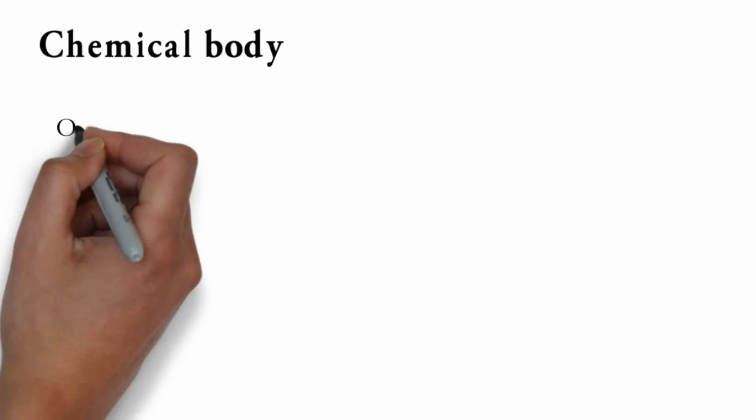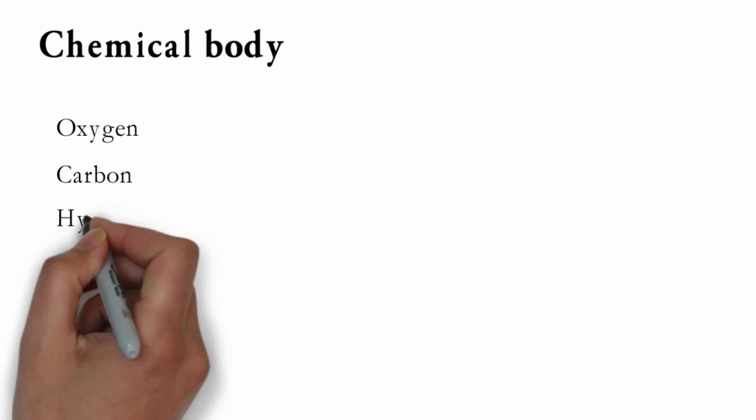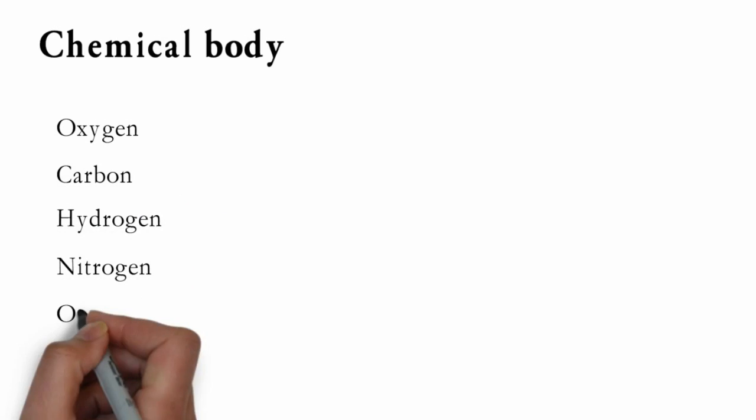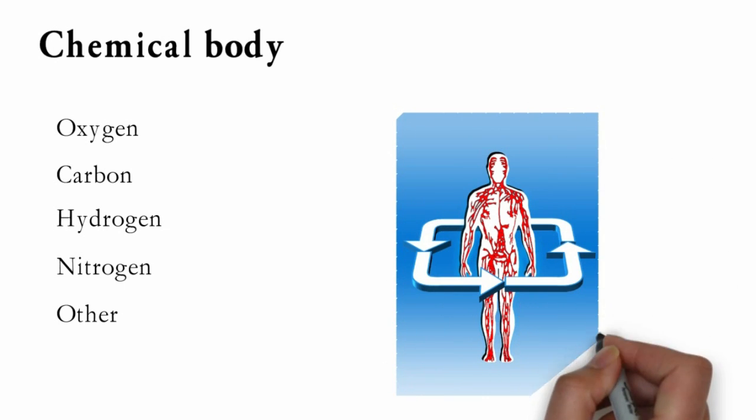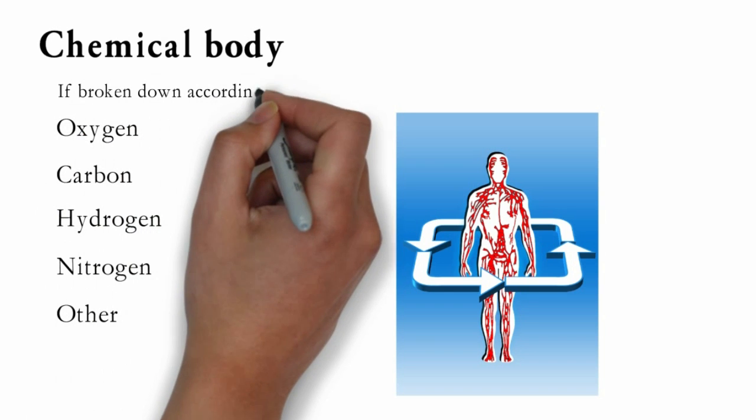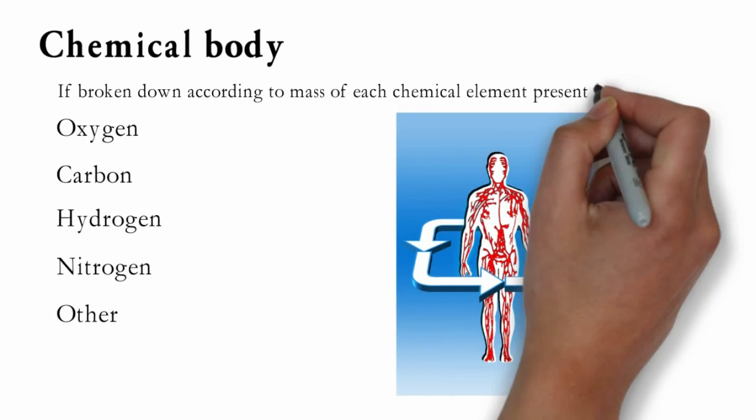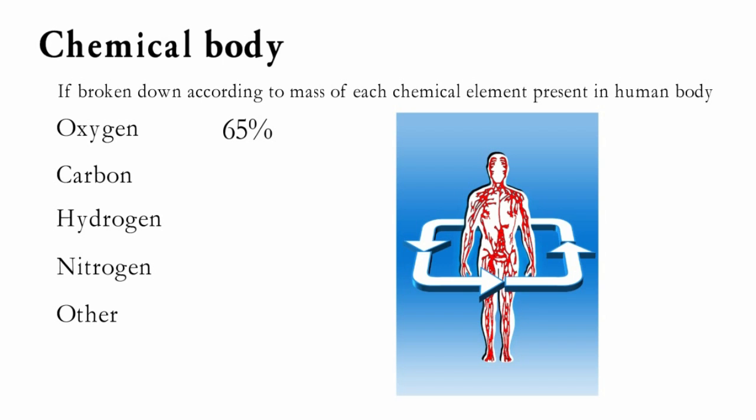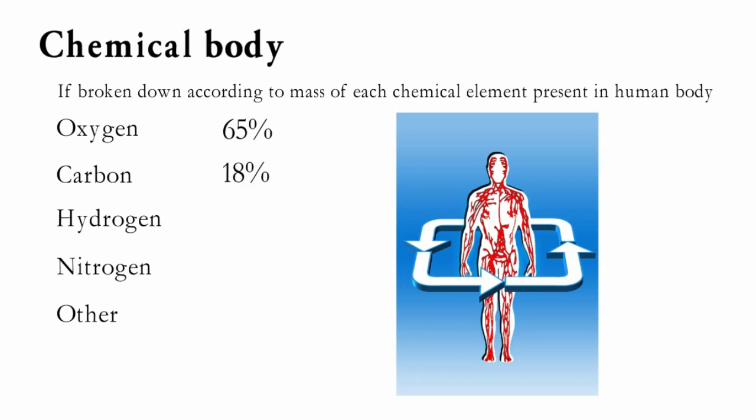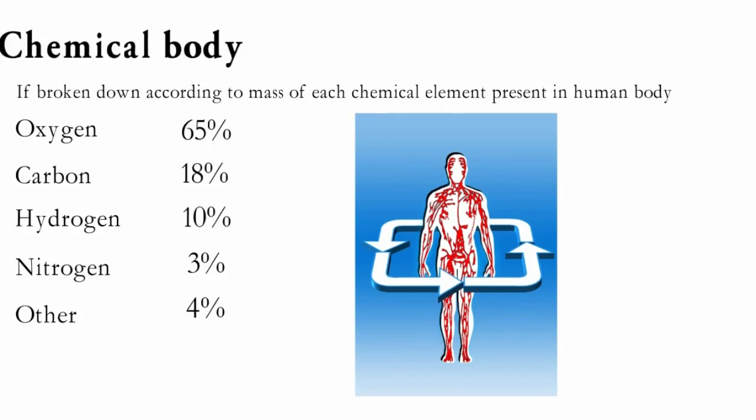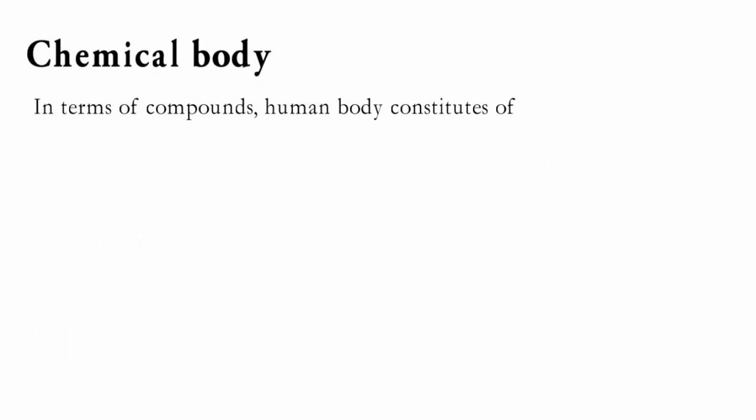Chemical Body. The human body mostly consists of oxygen, carbon, hydrogen, nitrogen, calcium, phosphorus, potassium, sulfur, chlorine, sodium, magnesium, iron, copper, zinc and some others. If broken down according to mass of each chemical element present in human body, oxygen is most abundant with about 65% share, carbon is about 18%, hydrogen with 10% share, nitrogen is about 3% and the remaining elements making the remaining 4%. In terms of chemical compounds,